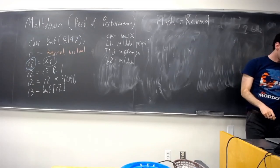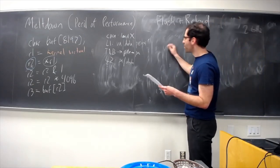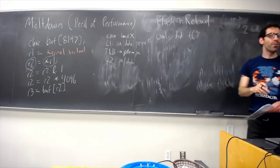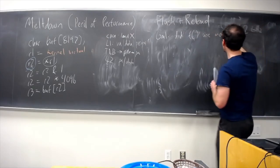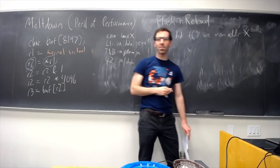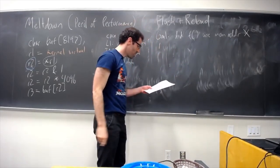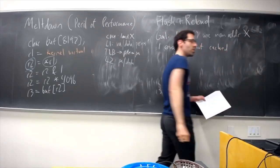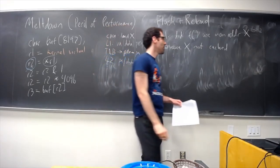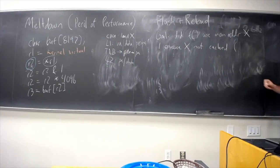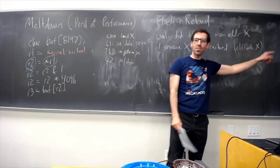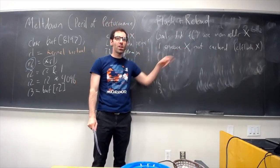Called flush and reload. Where, goes as follows. Our goal is, did some function f use memory address x. And the way that we can find this out is that we need to ensure, first, that this memory address x is not in the cache. The x86 instruction set architecture gives us a really convenient CL flush instruction that just says, you know, make sure this address is not in the cache.